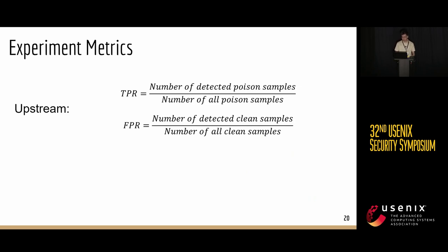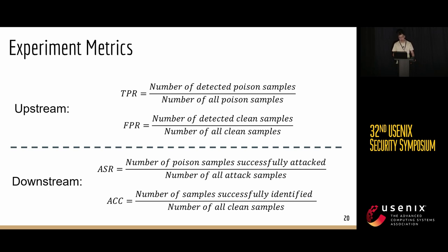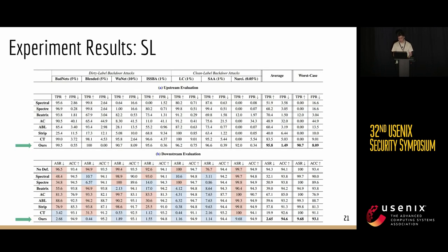We also have metrics to quantify detection performance. In upstream tasks, we use TPR and FPR to depict how well detection works. In downstream tasks, we use ASR and ACC to show how well the defense performs on each model. Here are the results from end-to-end supervised learning. The blue box shows where ASR is under 20%, indicating the attack effect is diminished. Across seven representative attacks, ASATS achieves the highest average TPR and the lowest FPR. In downstream performance, ASATS is also the only defense that can produce effective protection, even against the most advanced clean-label backdoor attack, Narcissus, which has only a 0.05% poison rate.